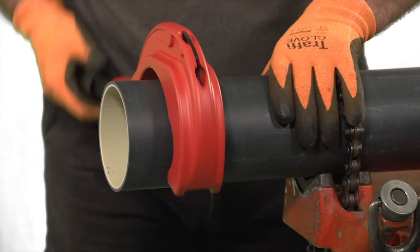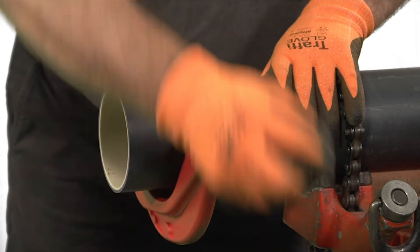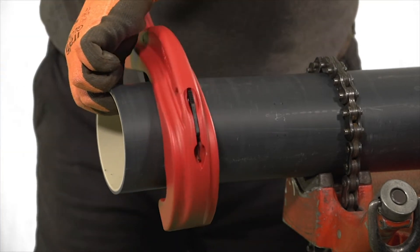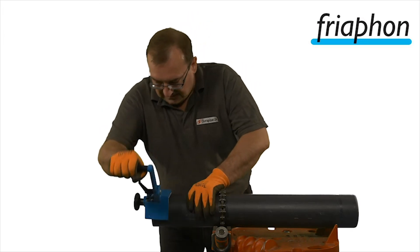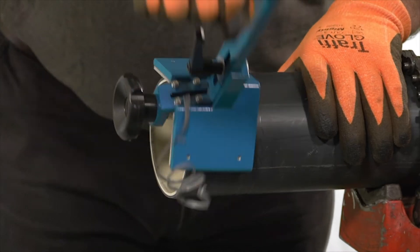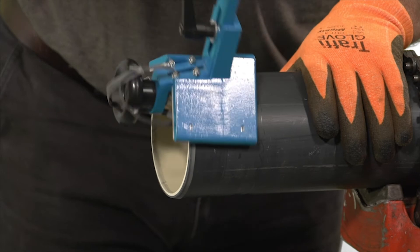When using the saw, it's important to make sure that you remove all swarf from the pipe. Chamfer the end of the pipe using an appropriate chamfering tool or a coarse file. For optimal jointing, the chamfer should be approximately 45 degrees.